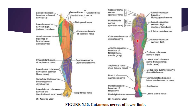Coming down in the posterior thigh region, the lateral cutaneous nerve of the thigh supplies the lateral region, and the cutaneous branches of the obturator nerve supply the medial region. The posterior part is supplied by the posterior cutaneous nerve of the thigh. In the posterior leg, the medial part is supplied by the anterior cutaneous branch of the femoral nerve, the upper and lower parts by the saphenous nerve, and the lateral region by the common peroneal nerve. There is also the medial sural cutaneous nerve from the tibial nerve in the posterior compartment.